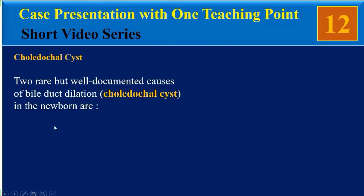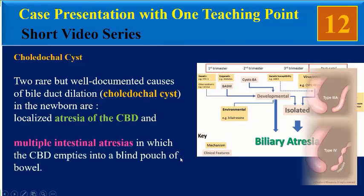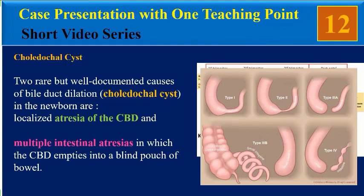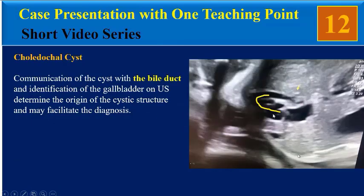Two rare but well-documented causes of bile duct dilatation or choledochal cysts in the newborn are localized atresia of the CBD and multiple intestinal atresias, in which the CBD empties into a blind patch of bowel. Prenatal diagnosis is usually made between 15 and 37 weeks of gestation, with an average gestational age of 20 weeks in a study of 10 cases. Communication of the bile duct and identification of the gallbladder on ultrasound determines the origin of the cystic structure and may facilitate the diagnosis.